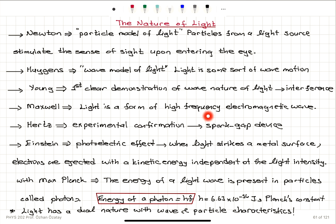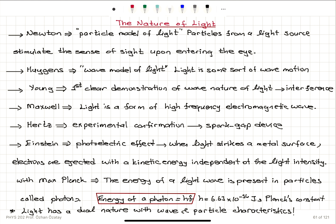Maxwell's equations show that light is a form of high-frequency electromagnetic wave. Hertz provides experimental confirmation that light is an electromagnetic wave using the spark gap device. Einstein explained the photoelectric effect — when light strikes a metal surface, electrons are ejected with a kinetic energy independent of the intensity of light but dependent on its frequency. With Max Planck, the energy of a photon is E = hf, where h is Planck's constant 6.63 × 10⁻³⁴ joule-seconds. The conclusion is that light has a dual nature with both wave-like and particle-like characteristics.